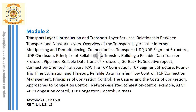The next transport layer protocol covered is the connection-oriented transport protocol TCP, including segment structure, round-trip time estimation, flow control, and TCP connection management. Principles of congestion control, causes of congestion, approaches to congestion control, network-assisted congestion control with the ATM ABR control example, and the TCP congestion control algorithm are also discussed. This module covers the services, comparison, and both TCP and UDP transport layer protocols.